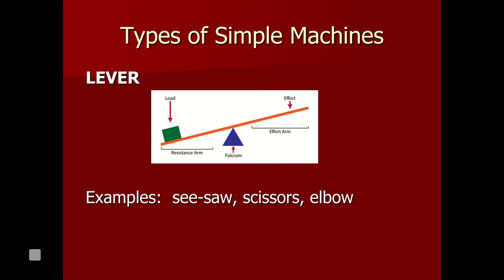The last one is what we call a lever. You're able to lift or move a heavier object based on how far you're pushing on it and by having something called a fulcrum. Examples include a seesaw, scissors, and your elbow — they're all different types of levers.